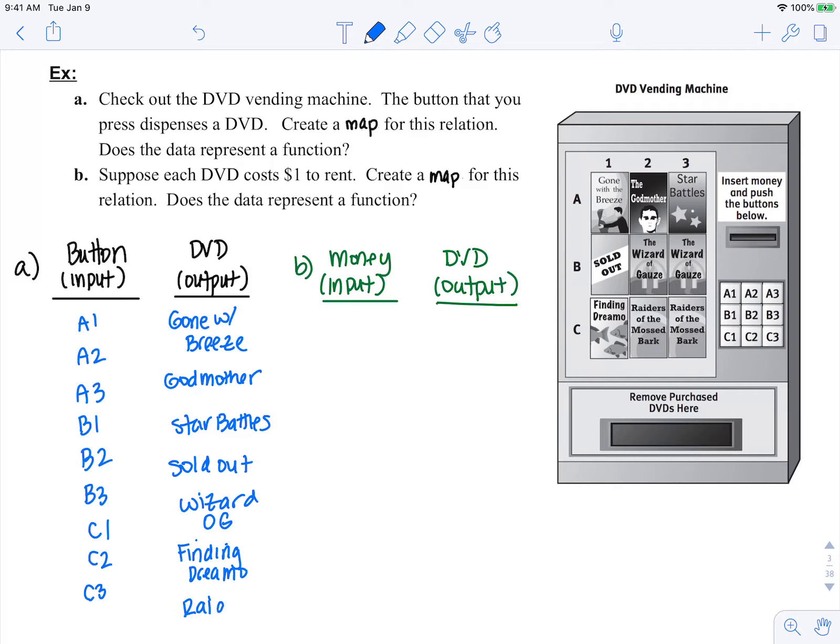I'm just going to call that raiders for short. So let's make a mapping. A1 maps to gone with the breeze. A2 maps to the godmother. A3 maps to star battles.